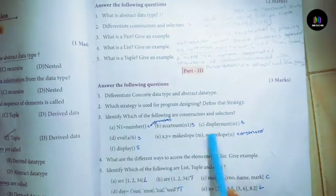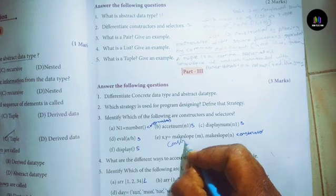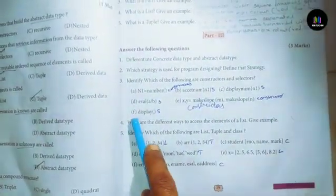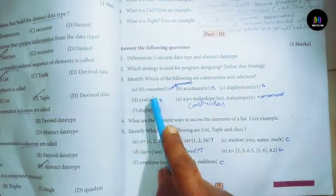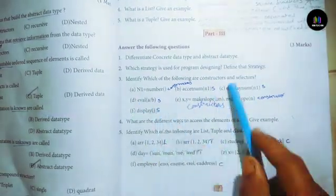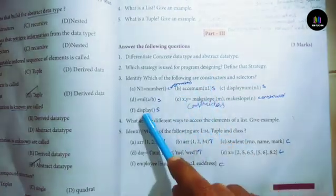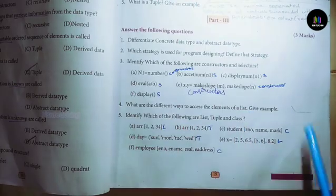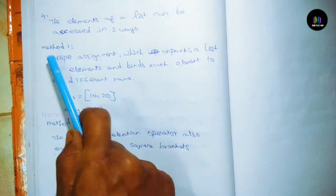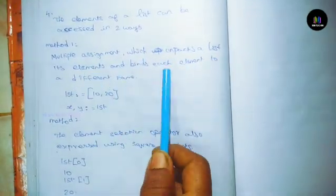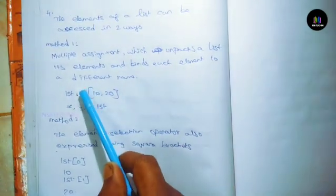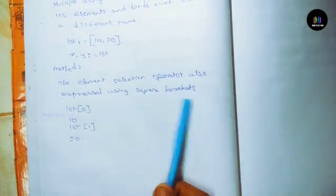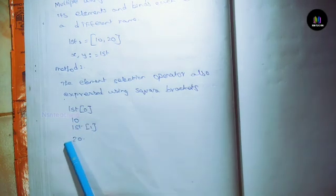E: make_slope - Constructors. Multiple assignment which unpacks a list into its elements and binds each element to different name. First such that equal to 10, 20, next x, y such that equal to first. Method 2: the element selection operator also expressed using square brackets. First[0] next 10, first[1] equals 20.